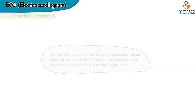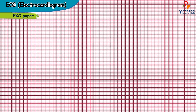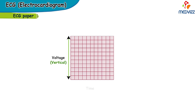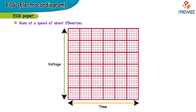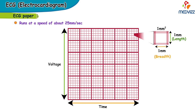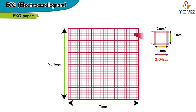Now let's talk about how a typical ECG paper looks. The vertical axis is reflective of voltage and time is plotted along the horizontal axis. The ECG paper runs at a speed of about 25 millimeters per second for all clinical purposes, meaning the paper covers 25 millimeters in one second. The ECG paper is divided into small boxes of about one millimeter square. Since the speed of the paper is 25 millimeters per second, it takes 0.04 seconds — or 40 milliseconds — to cover one millimeter of a small box.